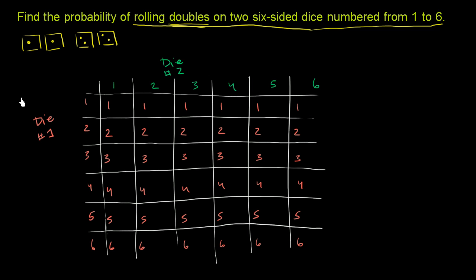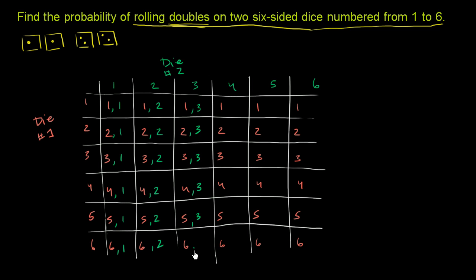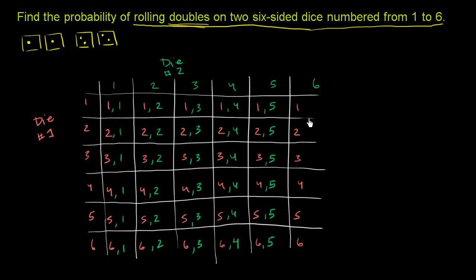We can go through the columns. This first column is where we roll a 1 on the second die. This is where we roll a 2 on the second die. Here's where we roll a 3 on the second die, here's where we have a 4, and here's where we roll a 5 on the second die. This last column is where we roll a 6 on the second die.